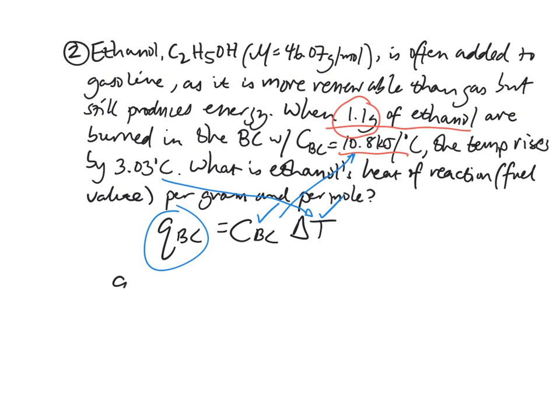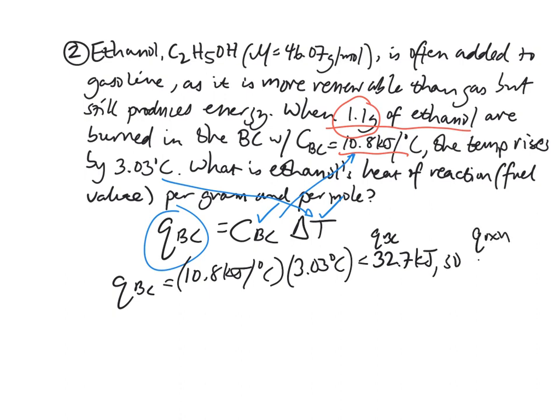So q of the bomb calorimeter will equal 10.8 kilojoules per degree Celsius times 3.03 degrees Celsius, which is about 32.7 kilojoules. So that's how much the bomb calorimeter absorbed. So q of the reaction is the opposite of that, negative 32.7 kilojoules. So it gave off 32.7 kilojoules.